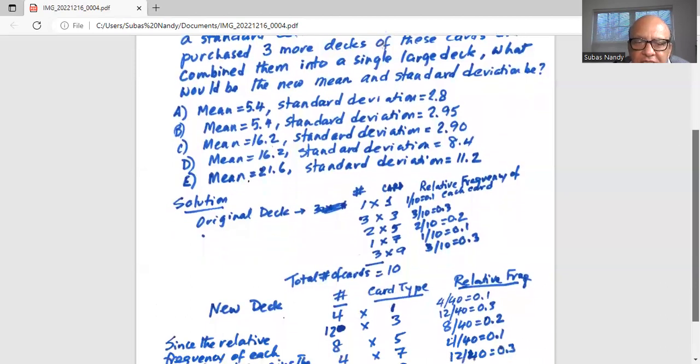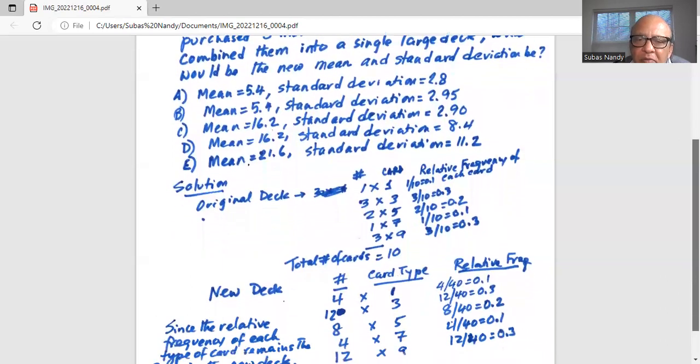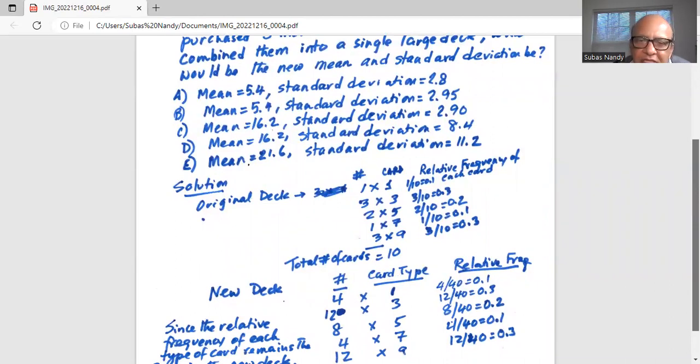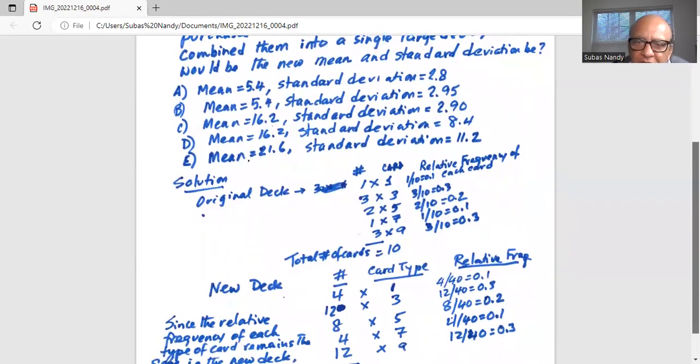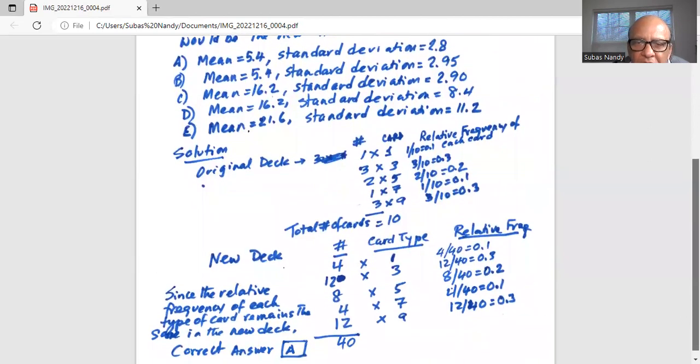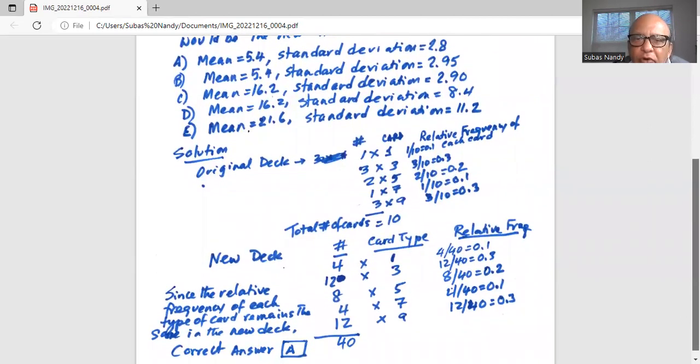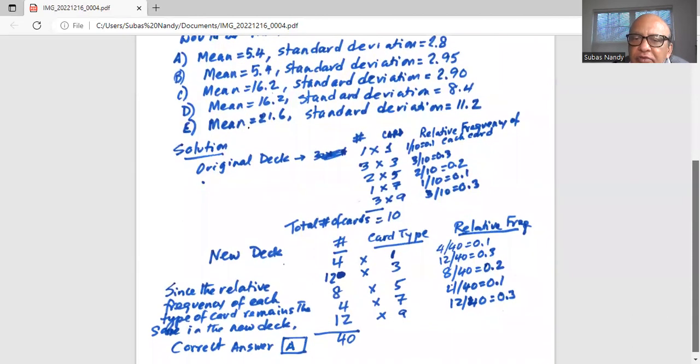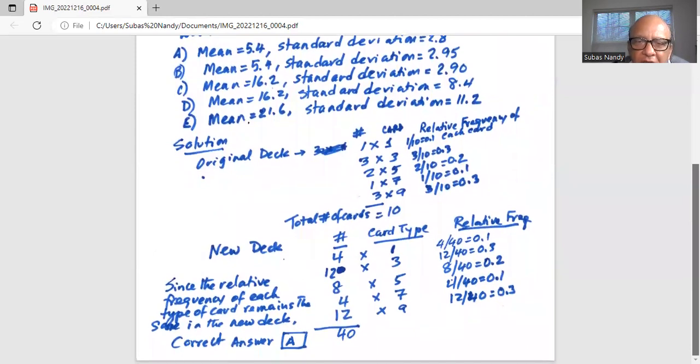Now total number of cards is 10. So now somebody buys three packs of these cards and combines them with the original deck. So now we have 3 + 1 = 4 cards containing number 1. Then, because we bought three packs, 3 × 3 = 9, plus original 3, equals 12 cards containing number 3. And we bought three packs, so 3 × 2 = 6, plus original 2, equals 8 cards containing number 5.